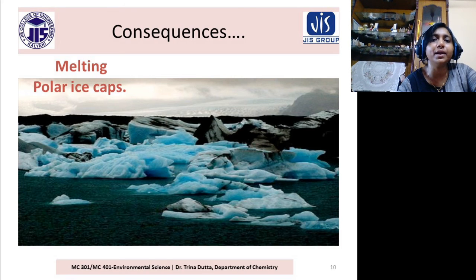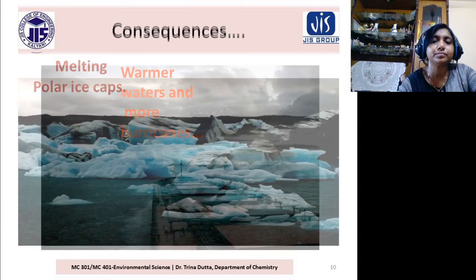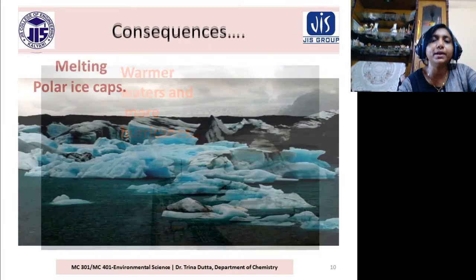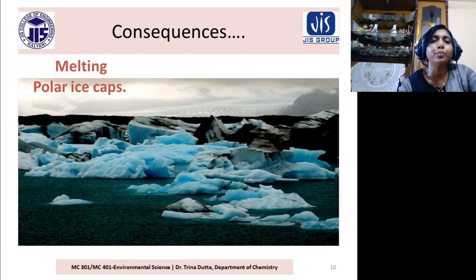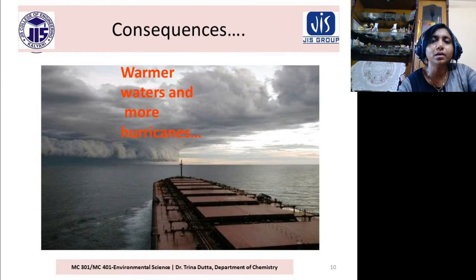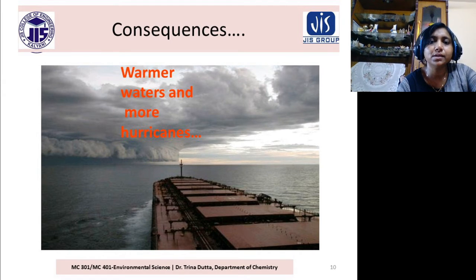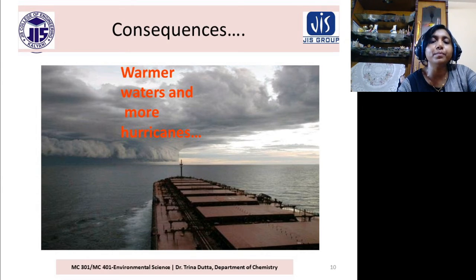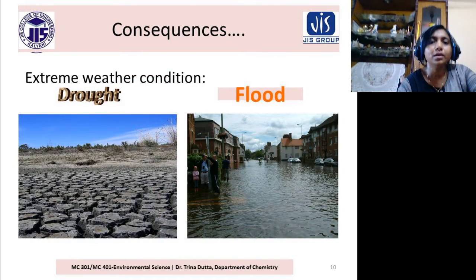Another consequence is polar bear extinction. This is the melting polar ice caps — if the temperature increases, the polar ice will melt. Another consequence is warmer waters and more hurricanes — extreme weather events are increasing. You can see drought in one place and flood in another.